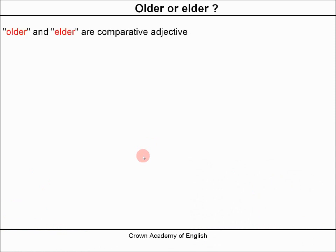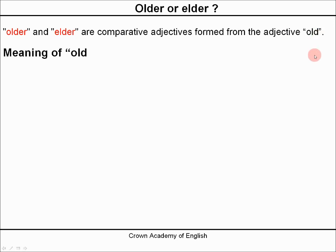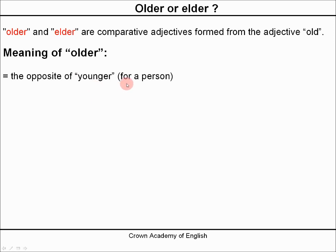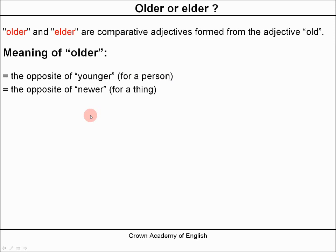Older and elder are both comparative adjectives formed from the adjective old. The meaning of older is it is the opposite of younger when we use it for a person. And when we use it to describe a thing, then the meaning is the opposite of newer.